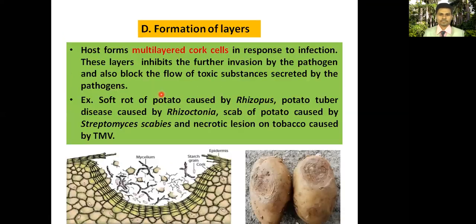Cork layer formation: the epidermis produces a cork layer that restricts the entry of fungal mycelium into the healthy cells of the host. This can be observed in Rhizoctonia infection on potato tuber.